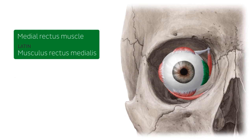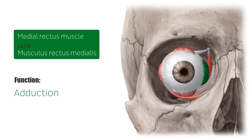When the eye is at a neutral position, contraction of the medial rectus muscle moves the pupil of the eye inward, medially towards the nose. This movement is called adduction.